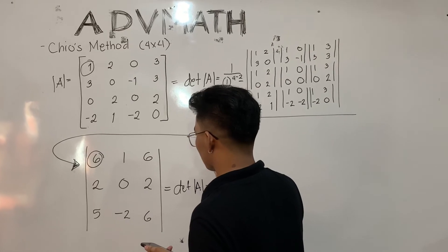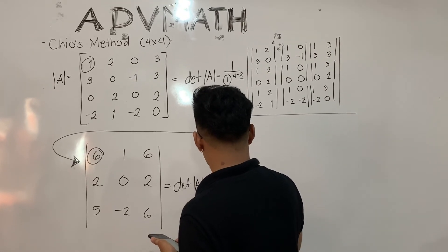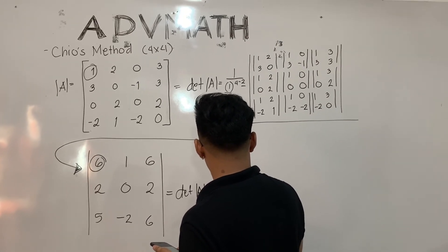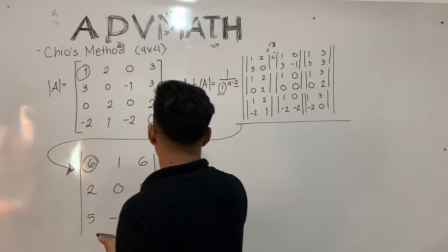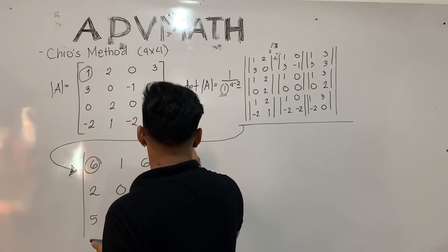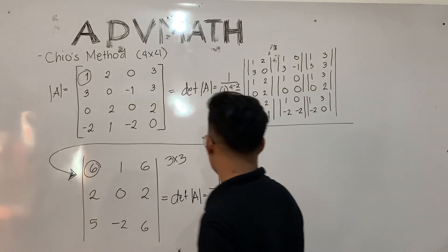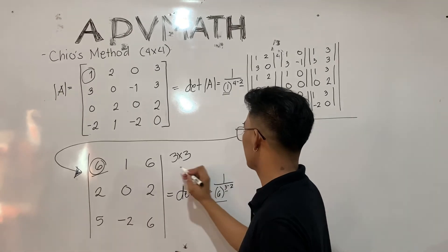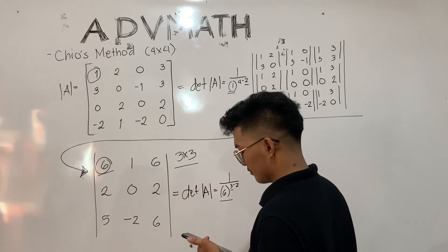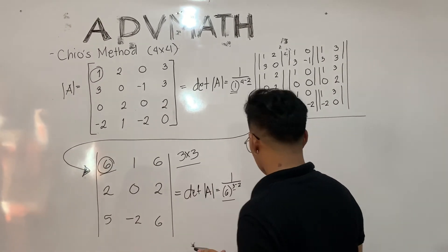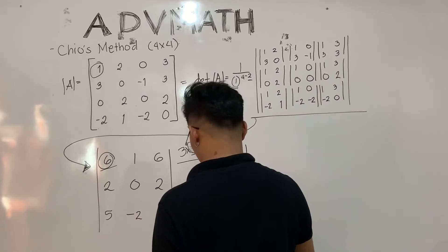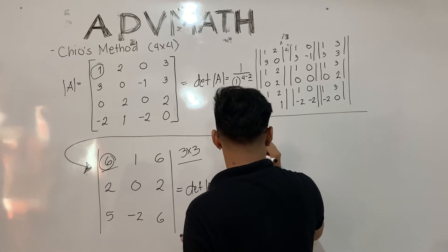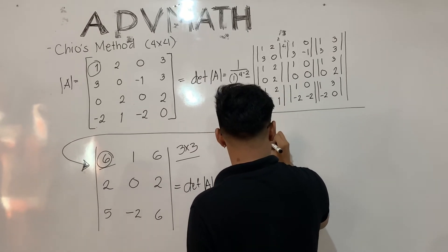We will use Chiyo's method again. The first element is 6, so the formula gives 1 divided by 6, raised to n minus 2, which is 3 minus 2 equals 1, so 1 over 6 raised to 1. We then multiply this by the elements of the matrix.